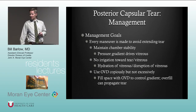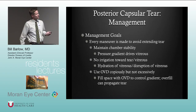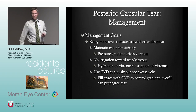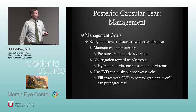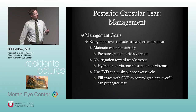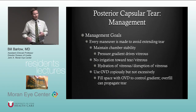If we have a posterior capsular tear, our management goals are that every maneuver is made to avoid extending the tear. We want to maintain chamber stability — pressure gradients will drive vitreous out of the eye or to areas we don't want. We don't want to irrigate towards the tear or vitreous because we can hydrate or disrupt it. We want to use OVD copiously but not excessively — we need enough to maintain the space and pressure gradient, but too aggressively can extend the tear and cause vitreous to come forward.